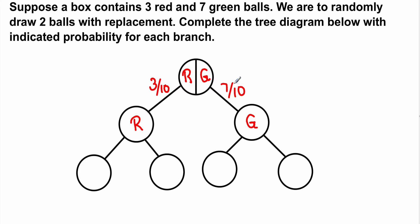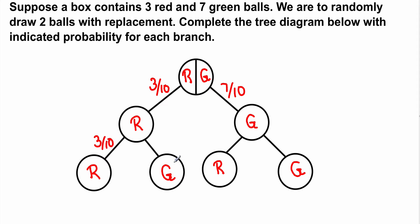Since this problem is with replacement, every time we draw a red ball the probability will be 3 out of 10, and every time we draw a green ball it will be 7 out of 10. On the second draw there are again two possibilities: we may get a red ball or we may get a green ball. Since we're doing it with replacement, probability of red is 3 out of 10 and probability of green is 7 out of 10 for every branch.